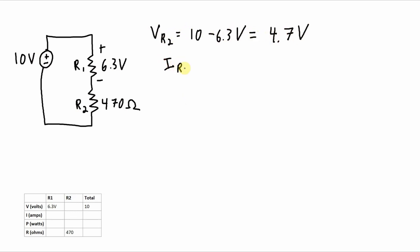Now I can quickly figure out IR2 from Ohm's law this time, and I get 4.7 volts over 470 ohms, and that works out to 0.01 amps. Because R1 and R2 are in series, that will be equal to the current through R1 also. The value of R1 will be the voltage across it divided by the current through it. So R1 is 630 ohms.